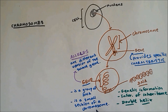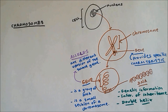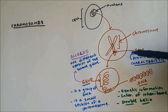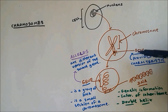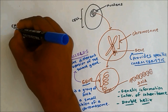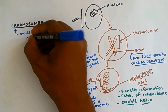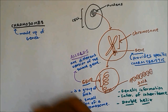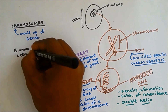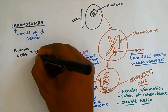Now I would like to talk about chromosomes. From this diagram you can see that chromosomes are made up of genes — genes make up chromosomes. If you take a human cell, a human cell contains 46 chromosomes.